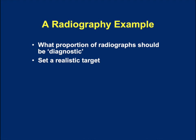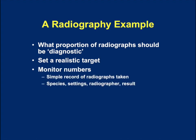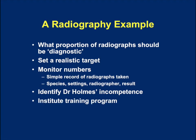How could we do this? If we simply record the radiographs taken — the species, settings, the radiographer, and the result, meaning whether it is diagnostic or not — we would identify any incompetence and could then institute a training program to make sure that person is as good as the rest of the practice, or at least on an upward trajectory. We keep monitoring, so it's likely that over time people will improve, though sometimes they will get worse. We wouldn't expect new graduates necessarily to be as good as experienced veterinary surgeons.